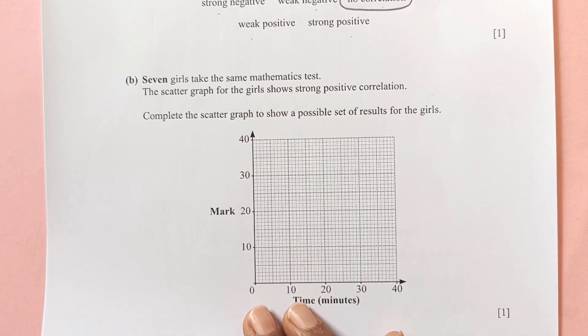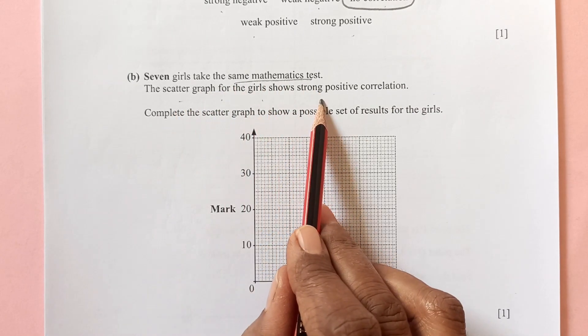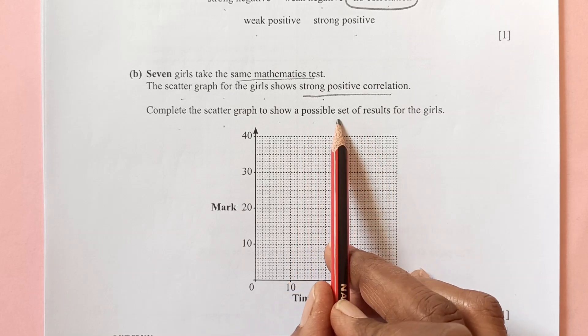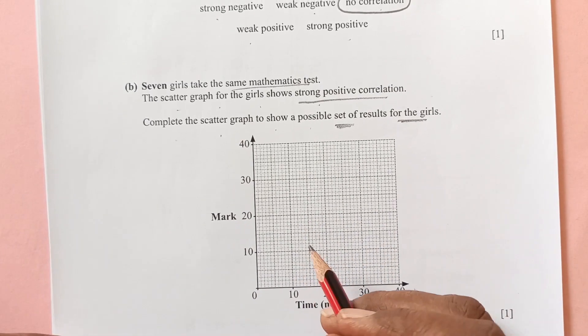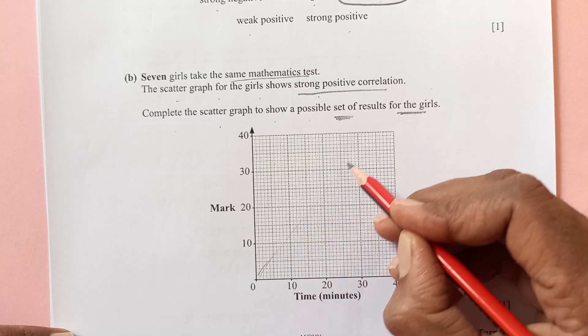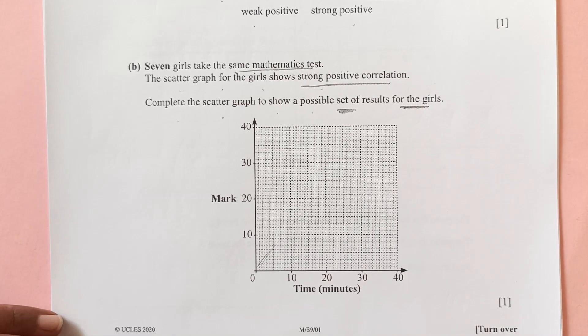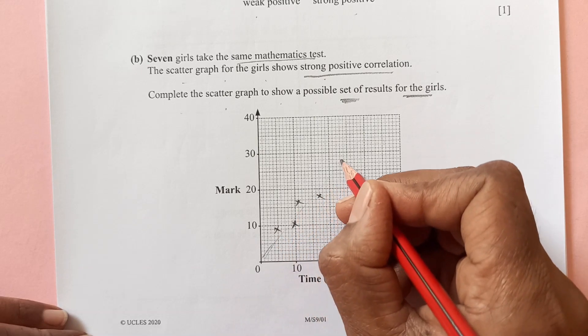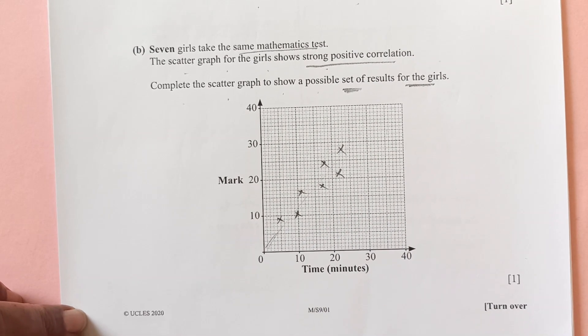Now b part. 7 girls take same mathematics test. The scatter graph for those girls shows strong positive correlation. Complete the scatter graph to show a possible set of results for the girls. Your answer may be different, like the points may be different. But mainly you see this way, this graph is increasing this way as time. We can have any 7 points here and there that are nearby. Like 3, 4, 5, 6, 7. So points are gathered together and they are increasing, so that will be a positive correlation.